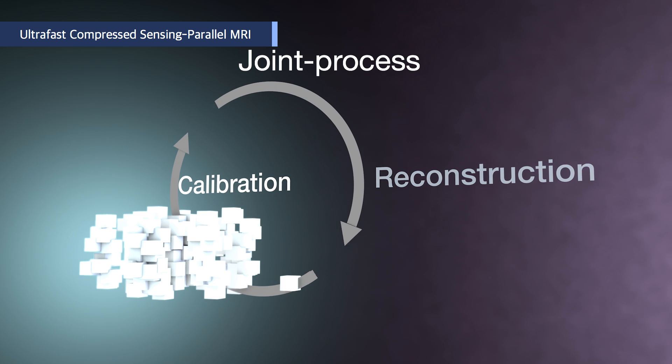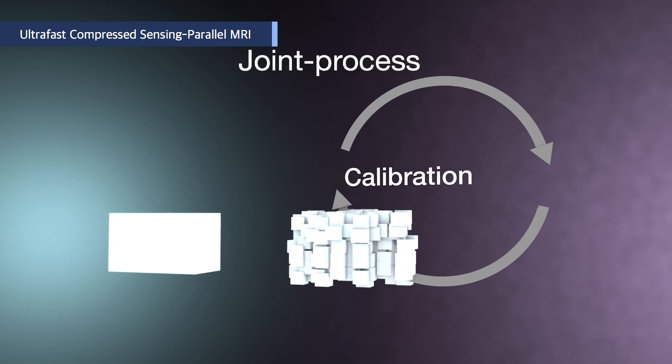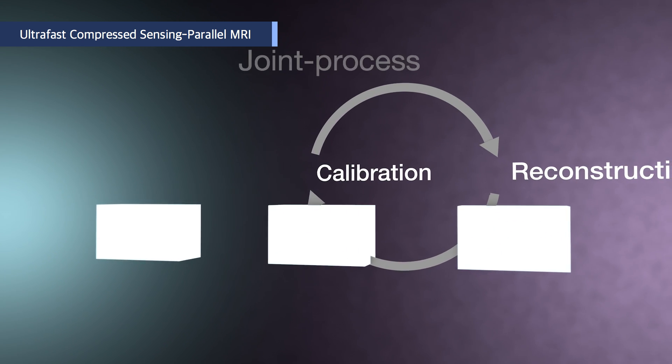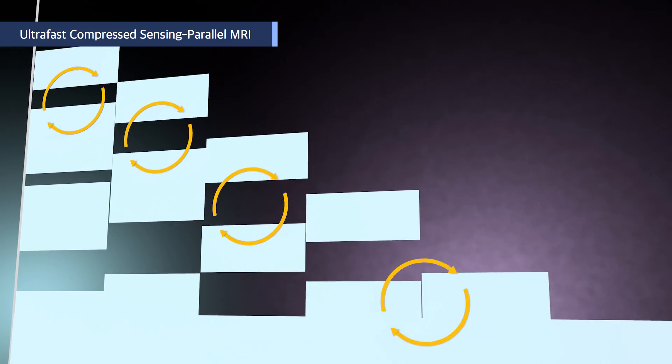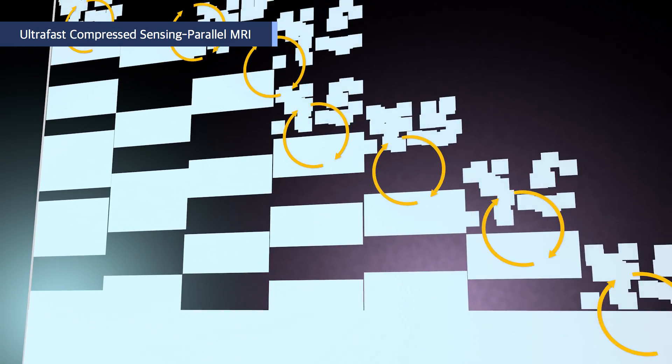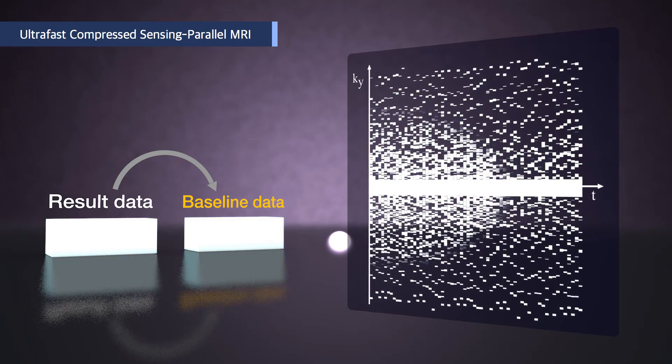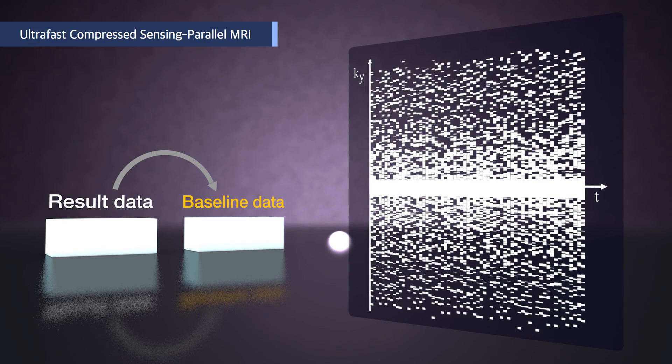Unlike existing technologies, this one adopts a joint process method that alternates calibration and data reconstruction. As these two processes interact with each other, it is possible to perform precise calibration even with a small amount of initial calibration data. The result is used as the baseline data for the next step to make it possible to restore an improved image.